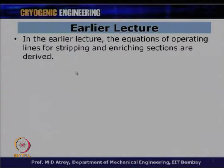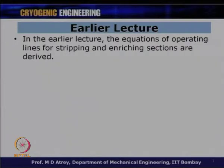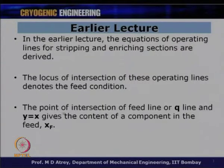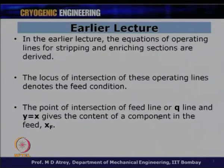In the earlier lecture, we derived the equations for the operating line for the stripping section and the enriching section. The section above the feed is called the enriching section and the section below is called the stripping section. We derived a relationship between the vapor fraction going up and the liquid molar fraction coming down — this is the operating line. The intersection of the two operating lines denotes the feed condition. The Q line intersection with y = x gives the composition of the low boiling component in the mixture, called xF.